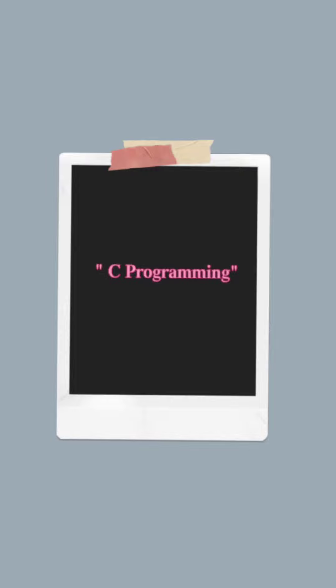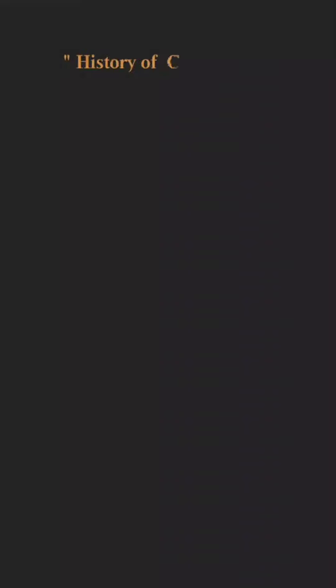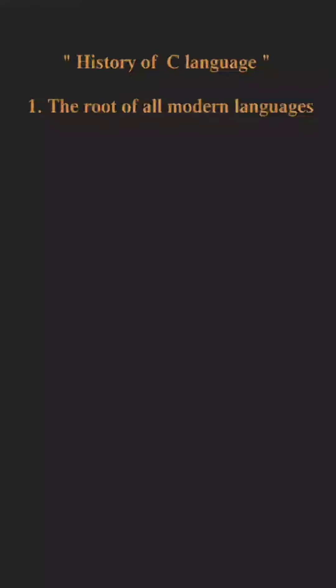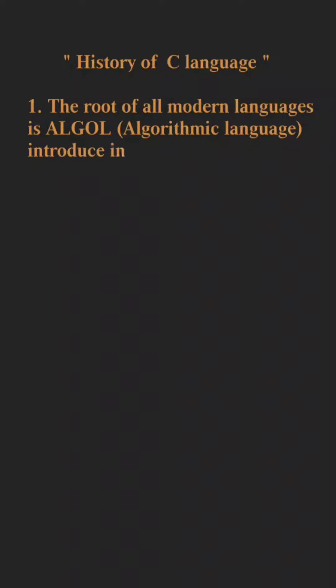Today we are going to discuss the history of C language. The root of all modern programming languages is ALGOL — the algorithmic language — introduced in the 1960s by an international group.